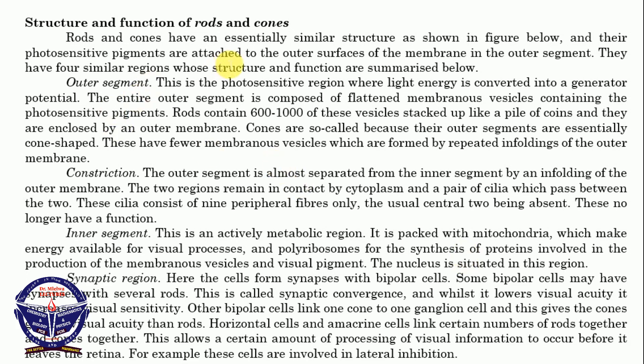So the rods and cones — we are continuing with the structure of the retina. As I always said, it is made up of three layers. When we discuss the structure of the rods and cones, we are dividing the photoreceptor layer into four segments. The rods and cones have an essentially similar structure as shown in the figure. The photosensitive pigments are attached on the outer surface of the membrane in the outer segment. They have similar regions whose structure and function are summarized below.